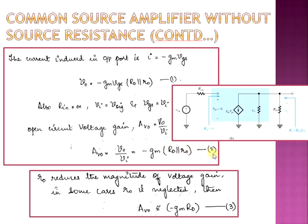AV0 = −GM × (Rd ∥ r0), denoted as equation number 2. Sometimes it is convenient to neglect the value of small r0, in which case the open circuit voltage gain is AV0 = −GM × Rd, equation number 3. We ignore the value of small r0 for discrete circuit amplifiers only; for all other cases we consider r0.